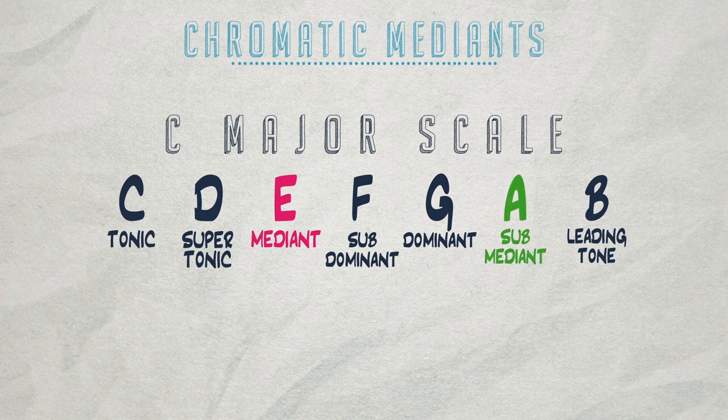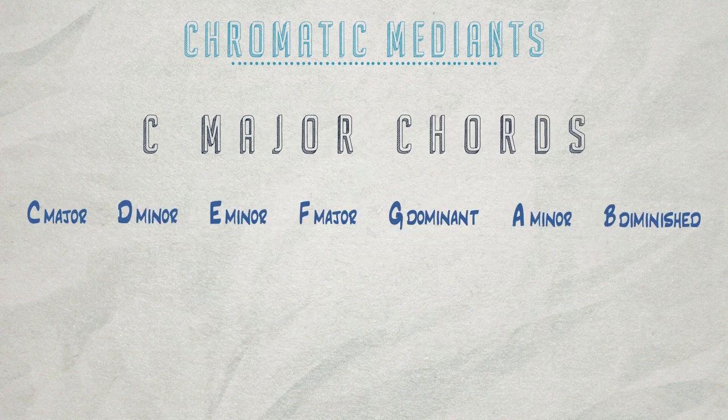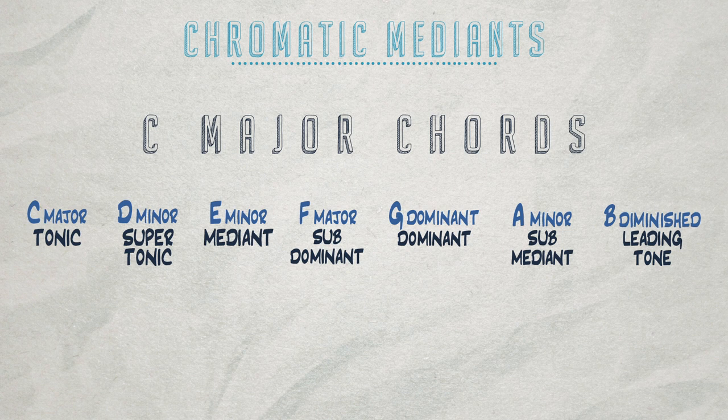The sixth scale degree, the note A, is called the sub-mediant. The interval distance from C down to A is a minor third. If we have a look at the chords of C major, you see that the scale degrees and the chords have the exact same naming convention. So we can think of the chord E minor as our mediant chord and the chord of A minor as our sub-mediant chord.